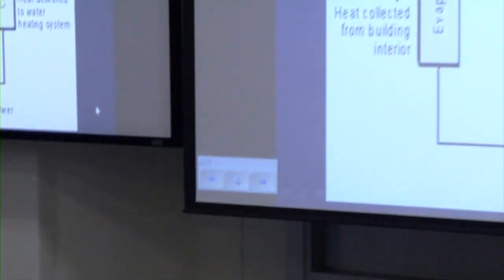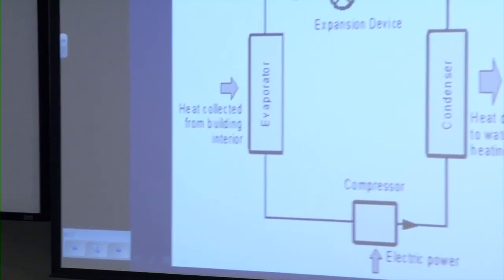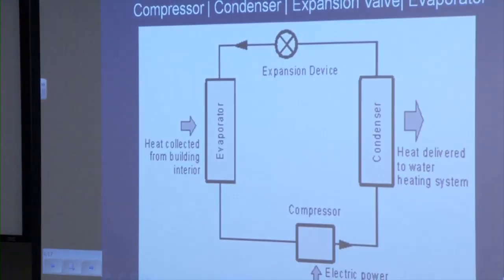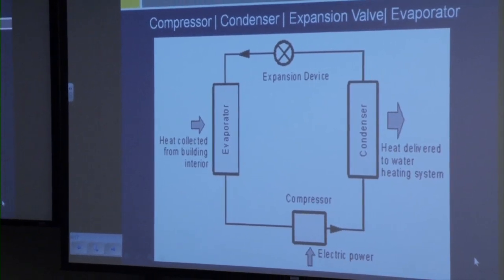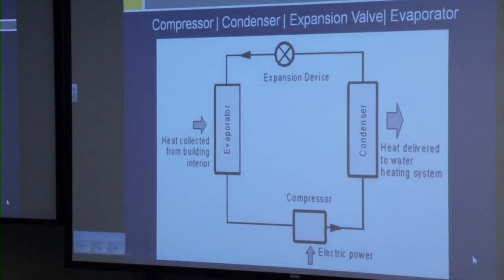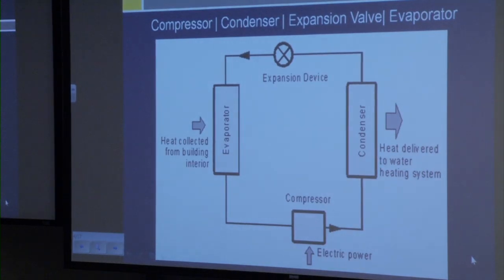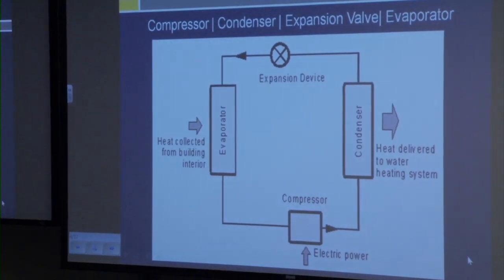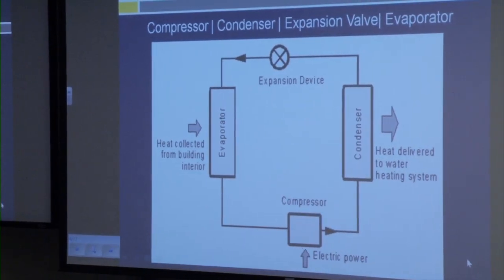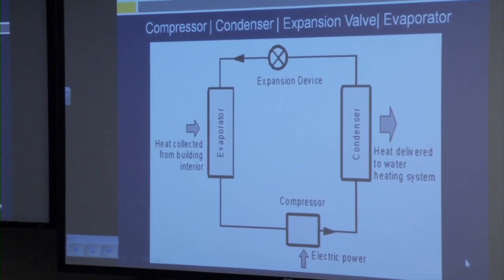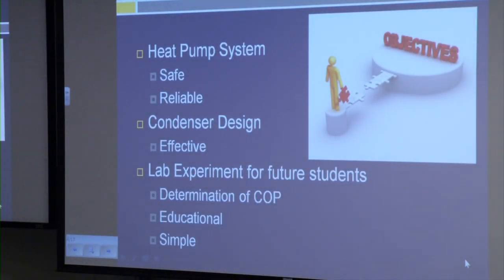If you look at the screen you will see the four main components of a heat pump: a compressor, a condenser, an expansion valve, and an evaporator. This schematic diagram shows the basic workings of a heat pump. On the left-hand side, the evaporator shows where the refrigerant will be flowing through and absorbing heat from the room. The refrigerant will then flow through the cycle over to the condenser where it will reject the heat into the water. Anthony will discuss our system in more detail later.